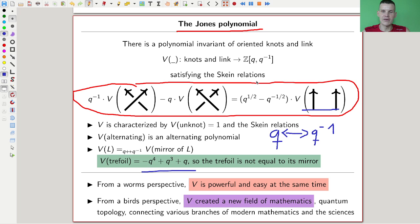As soon as you have this polynomial, which is not invariant under this move, the knot is not the same as its mirror image. It's a very easy proof of the trefoil conjecture, but it also works for many, many others. It's really fantastic. So the Jones polynomial is powerful and easy at the same time, which is remarkable.